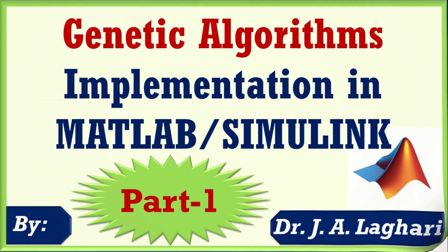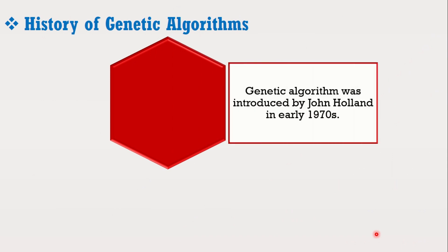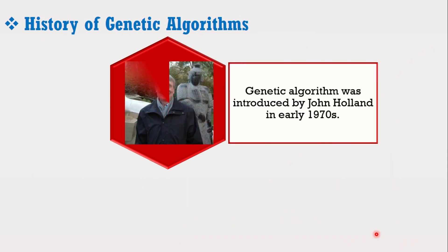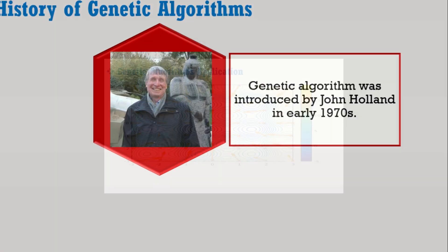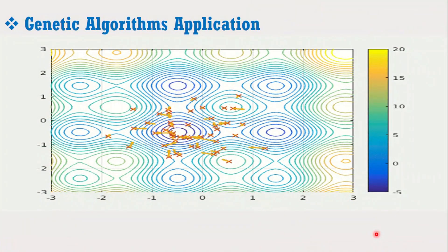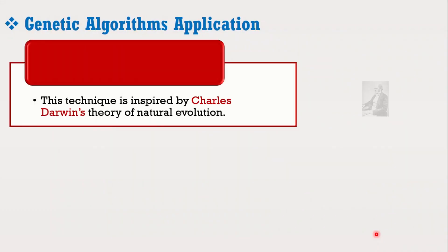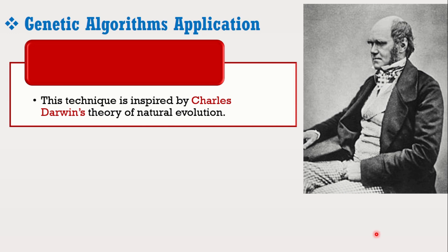The genetic algorithm was introduced by John Holland in the early 1970s. It is a search-based algorithm used for solving optimization problems in machine learning. This technique is inspired by Charles Darwin's theory of natural evolution.